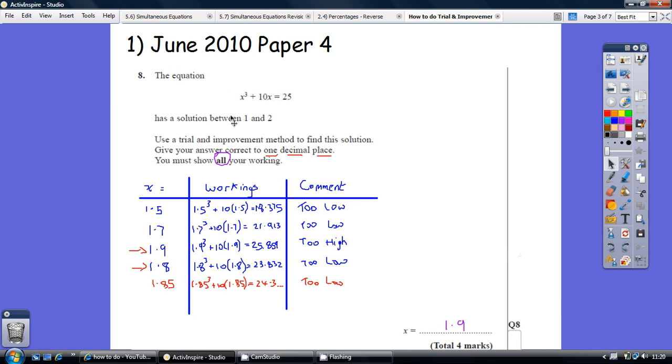Kick off by splitting the difference. Go halfway between 1 and 2, so 1.5. Set out the substitution you're just about to do. Plug the numbers into your calculation, you get 18.375. Now this is less than 25, so the comment should be too low. We know the true solution is bigger than 1.5.